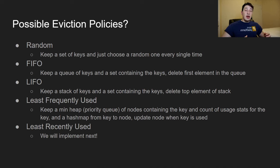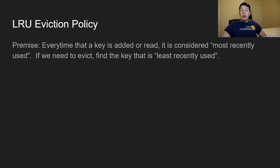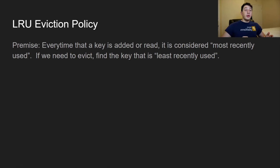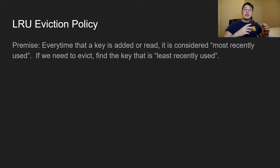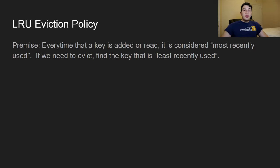Finally, we have LRU — least recently used. This is probably the most commonly used eviction policy in caches. Keys that have been accessed or updated frequently are considered recently used; the one that hasn't been accessed in the longest time is least recently used and should be evicted next. Let's walk through an example.